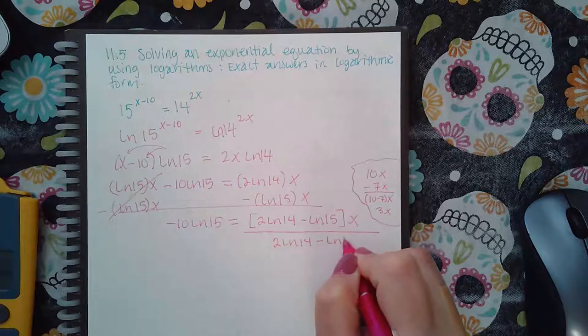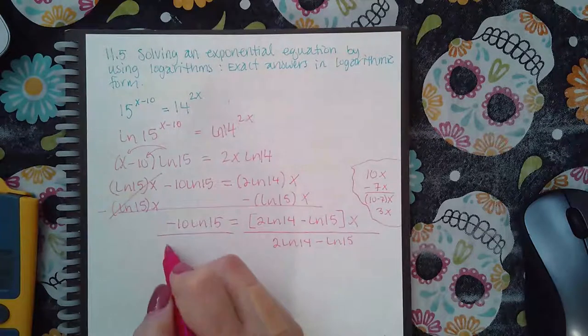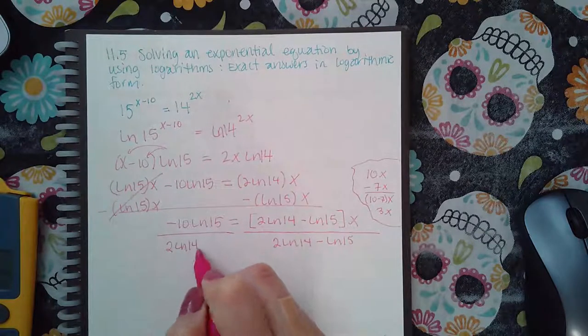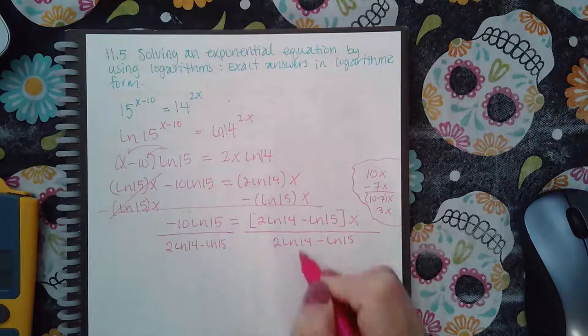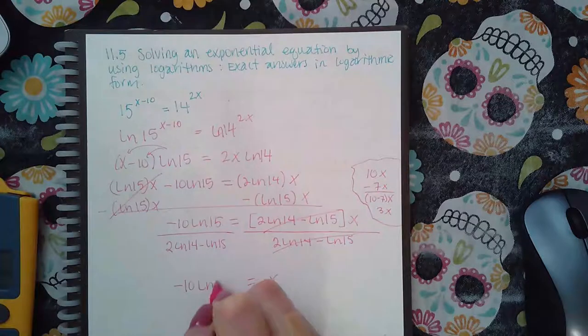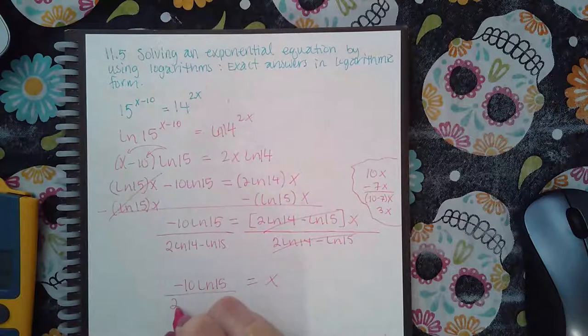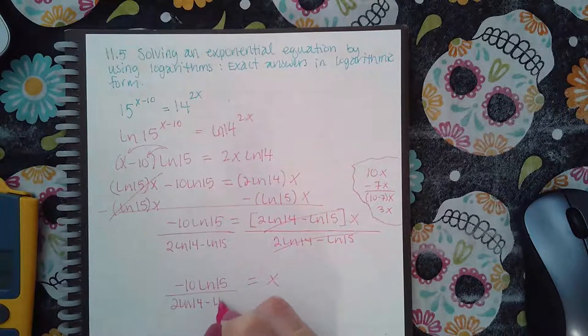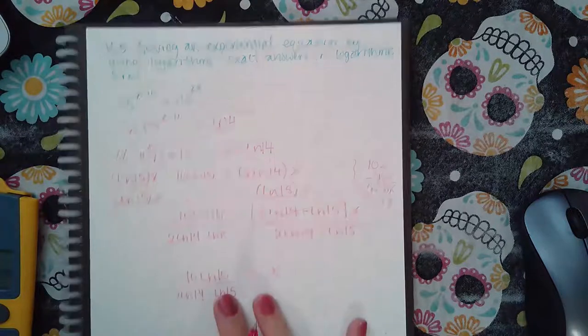So I'm going to divide by that whole coefficient on both sides, and then that cancels this, and I get x equal to—and this is the exact answer. And so you just have to make sure that you type it into the computer correctly.